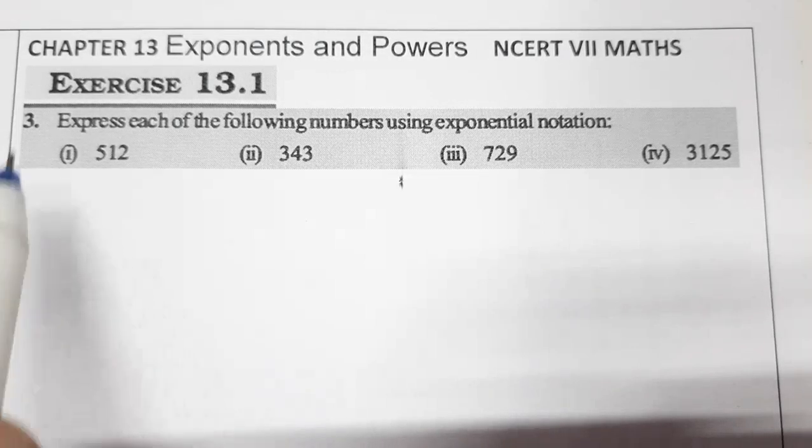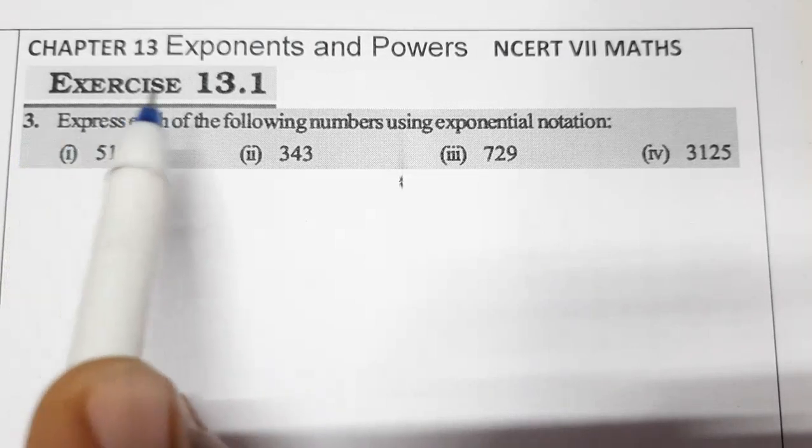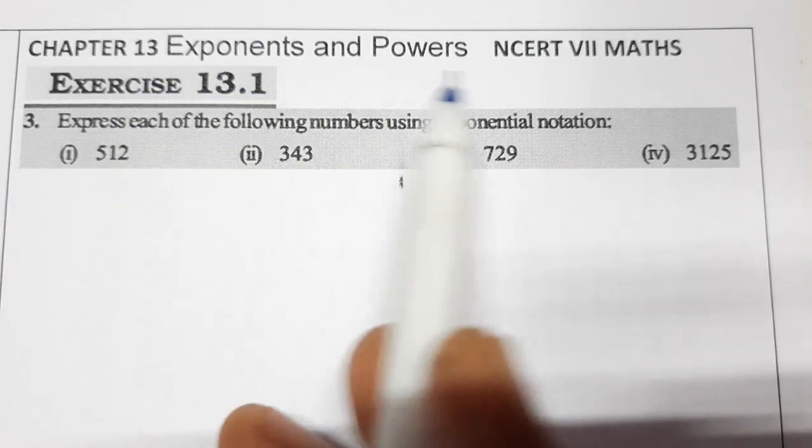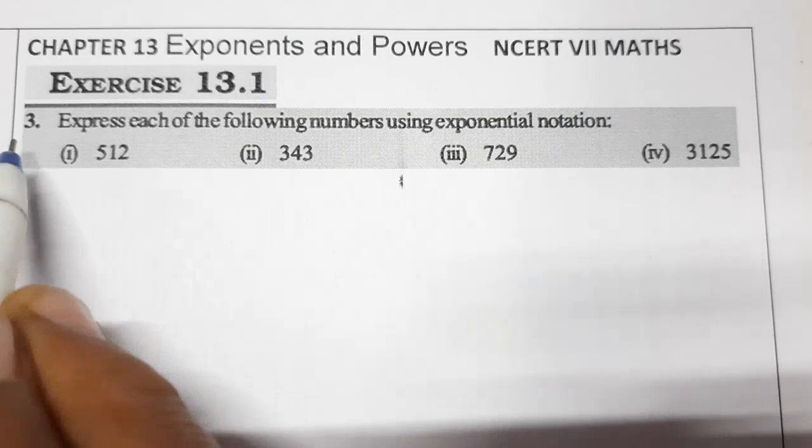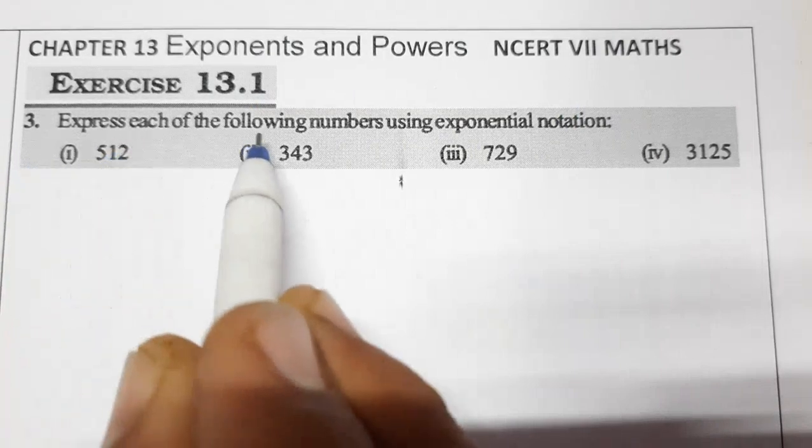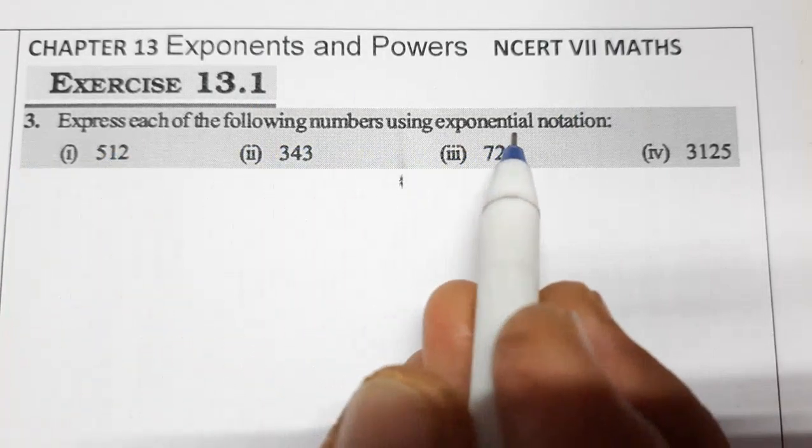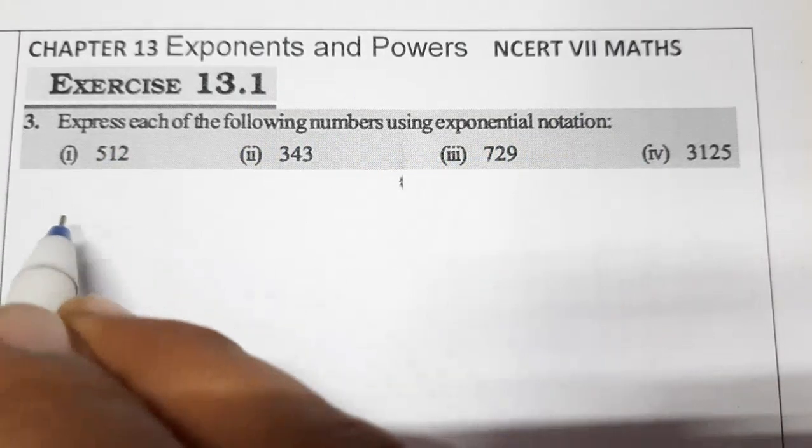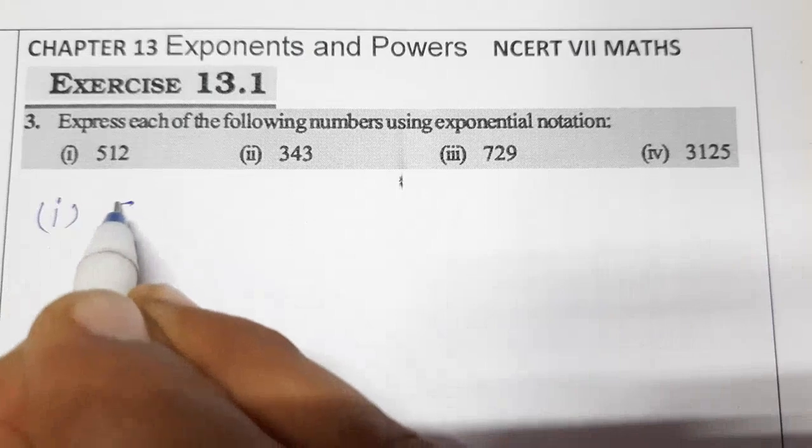Hello students, today we are going to do question number 3 of exercise 13.1, chapter 13, exponents and powers, 7th class. Question 3 is: express each of the following numbers using exponential notation. First one is 512.